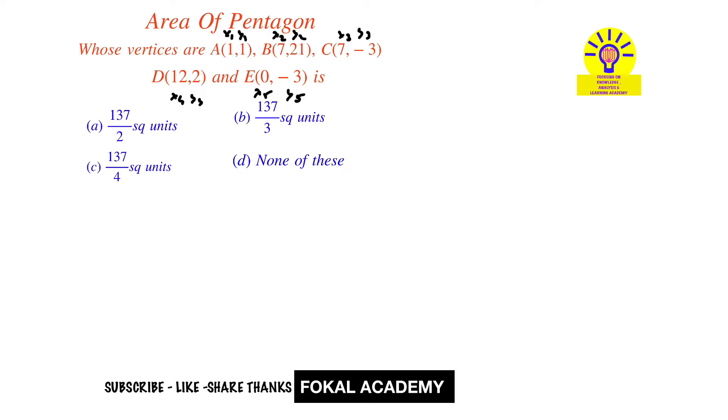Now we have a formula for finding the area of pentagon whenever vertices are given. That is the staircase method, that is half of... So first of all, take the A point, that is x1y1.